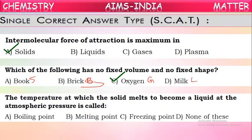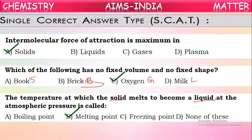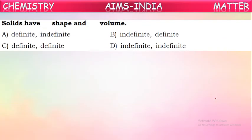Question 4: The temperature at which a solid melts to become a liquid at atmospheric pressure is called what? The conversion of solid into liquid is called melting, and the temperature at which melting occurs is called the melting point. For example, ice converts into liquid water at 0 degrees Celsius, so 0 degrees Celsius is the melting point of ice.